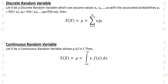First of all, for any discrete random variable, let x be a discrete random variable which can assume values x1 to xn. It can take any of these values with associated probabilities: p1 = P(X = x1), p2 = P(X = x2), and pn = P(X = xn). In that case, the expectation of x is simply equal to mu, symbolized as E[X].